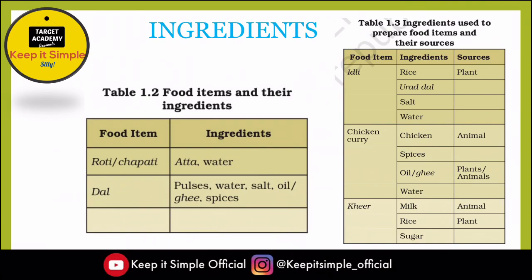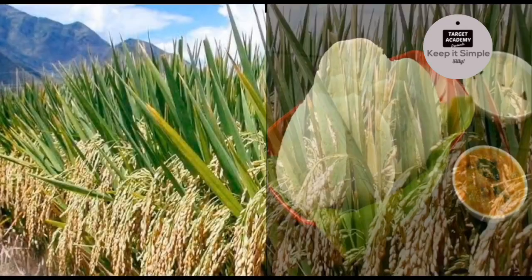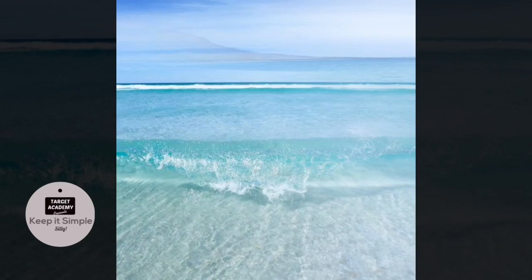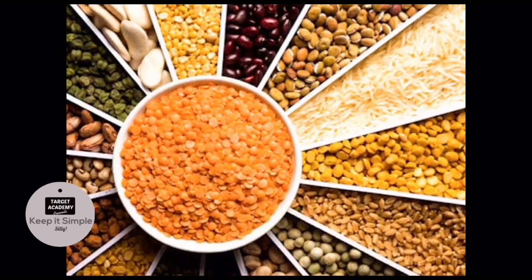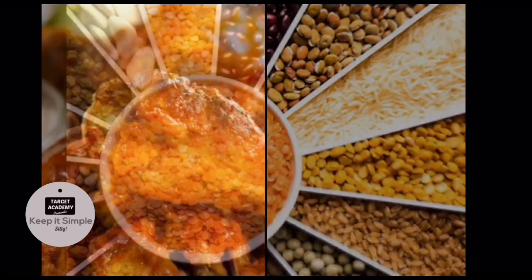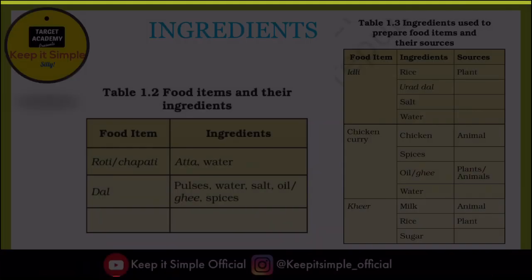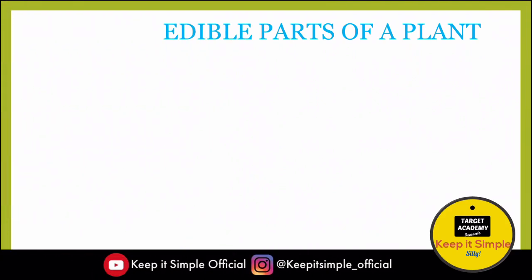In the other chart, we have to know the source of ingredients. For example, when we make idli, we need rice, urad dal, salt, and water. Salt is naturally available and it comes from the sea. Rice comes from plants, urad dal also comes from plants, but chicken comes from animals — it's a form of meat. So the source of our food can be plants or animals.